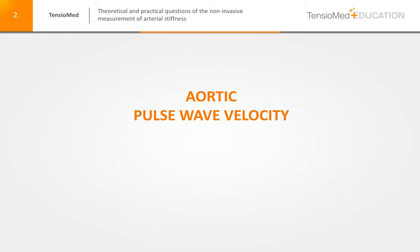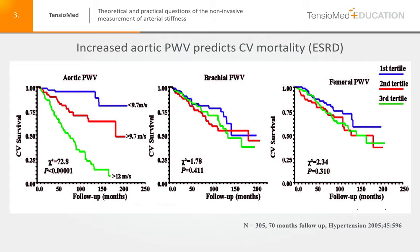Let's talk in more detail about the aortic pulse wave velocity. It is well known as a predictor of cardiovascular morbidity and mortality. The very first data came from end-stage renal disease trials, where it was nicely pointed out that increased aortic pulse wave velocity predicts cardiovascular mortality.